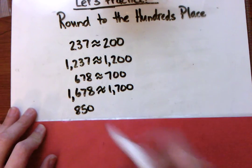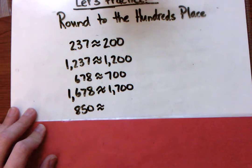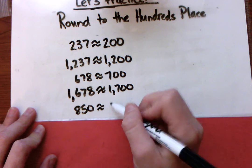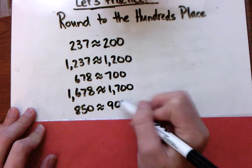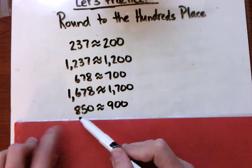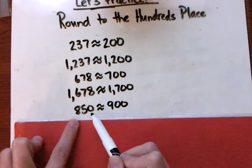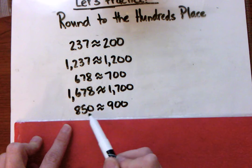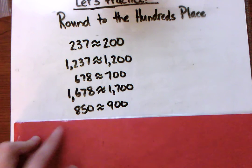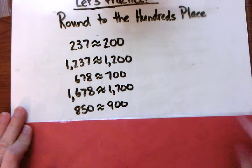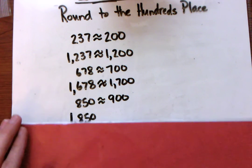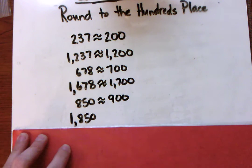Eight hundred fifty rounded to the hundreds place is nine hundred. What would you notice if you drew this on a number line? Where between eight hundred and nine hundred is eight hundred fifty? That's right, it's on the midpoint or halfway between eight hundred and nine hundred. We always round up when it's right on the midpoint.